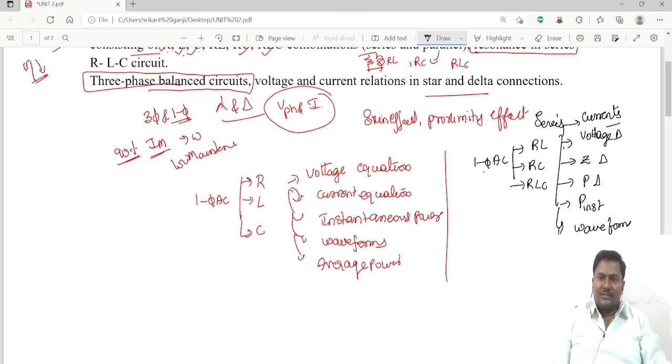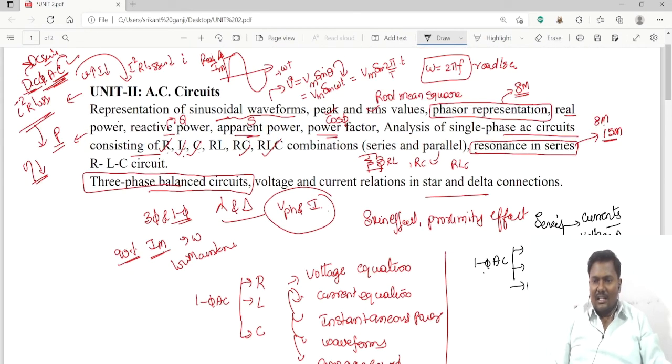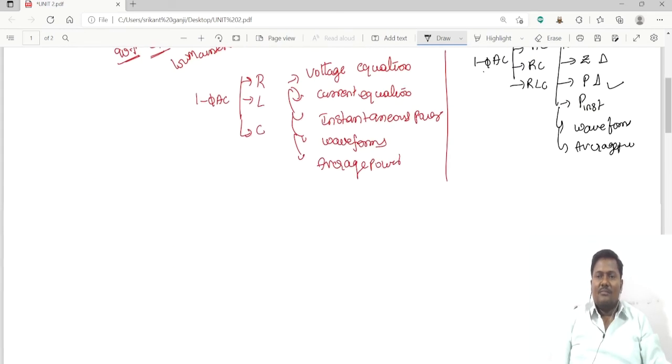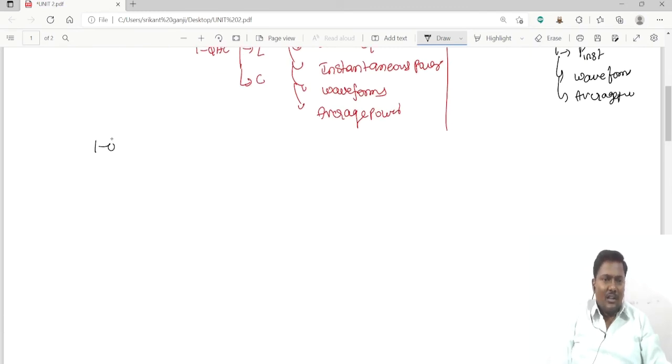While we are drawing the power triangle, we can define the real power, reactive power, and apparent power from the power triangle. The power factor can be defined from the power triangle as well as the impedance triangle if you are going for single-phase AC supply.